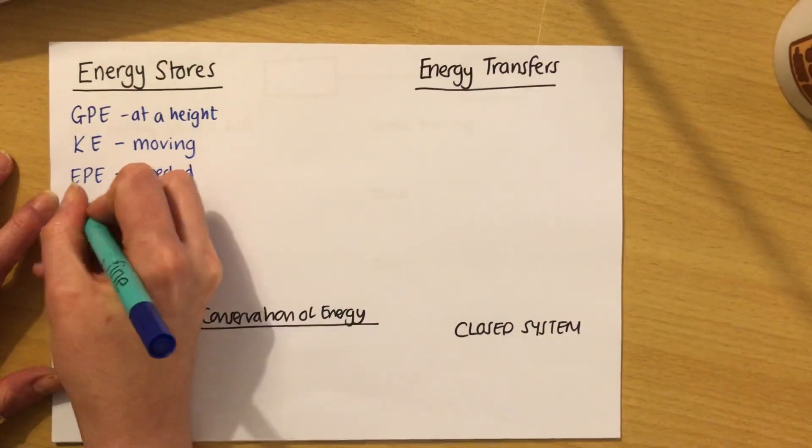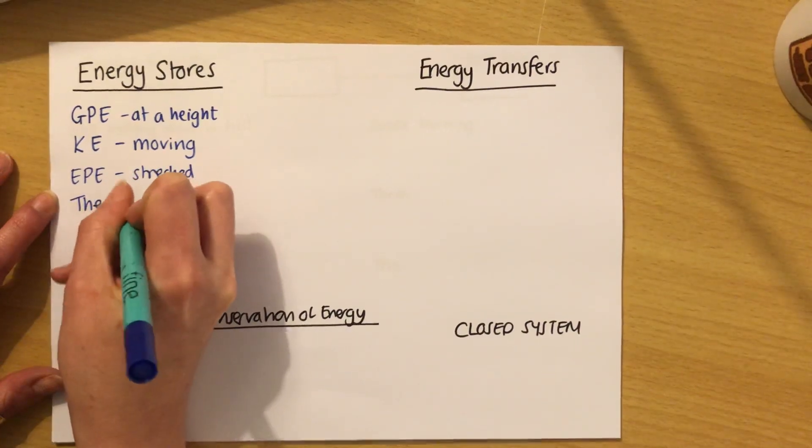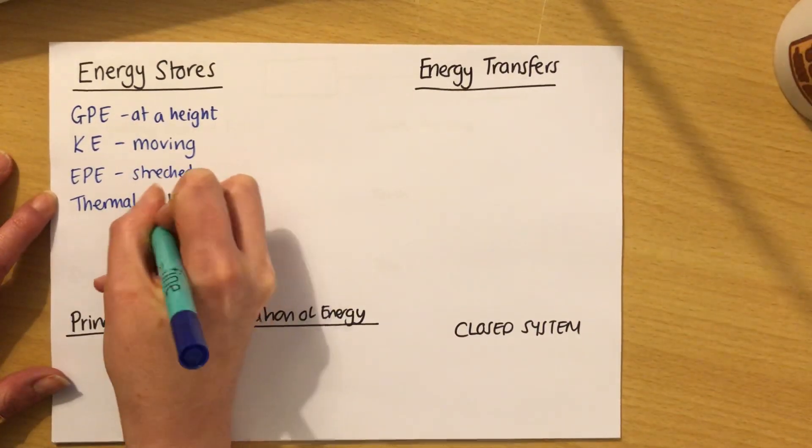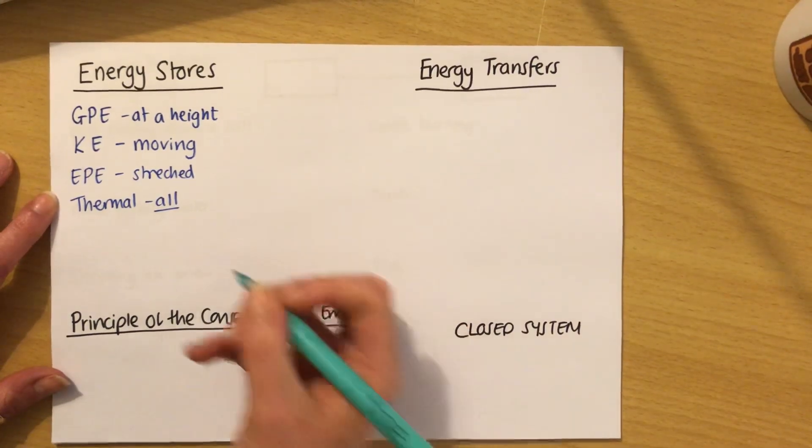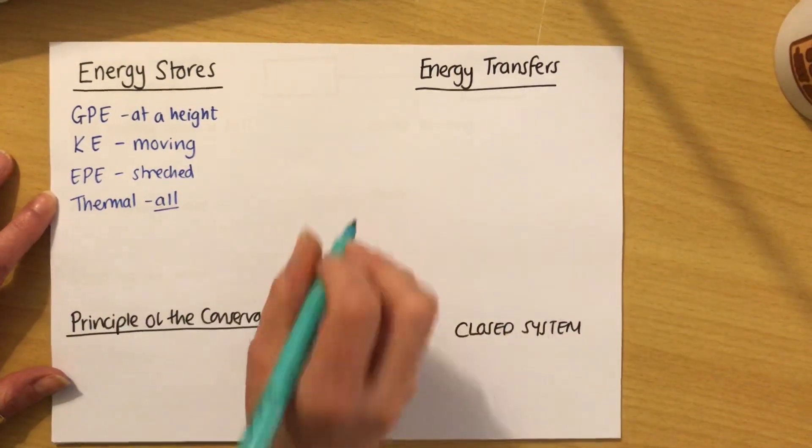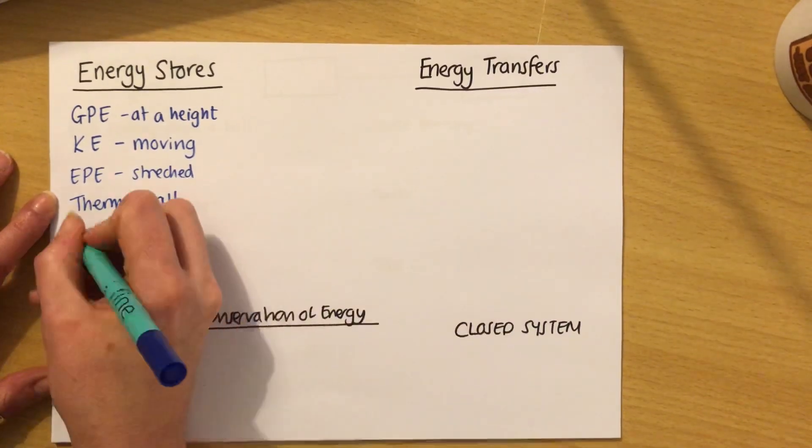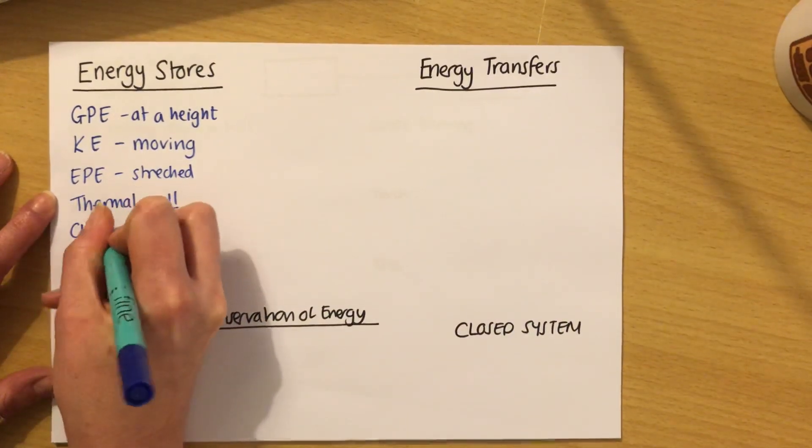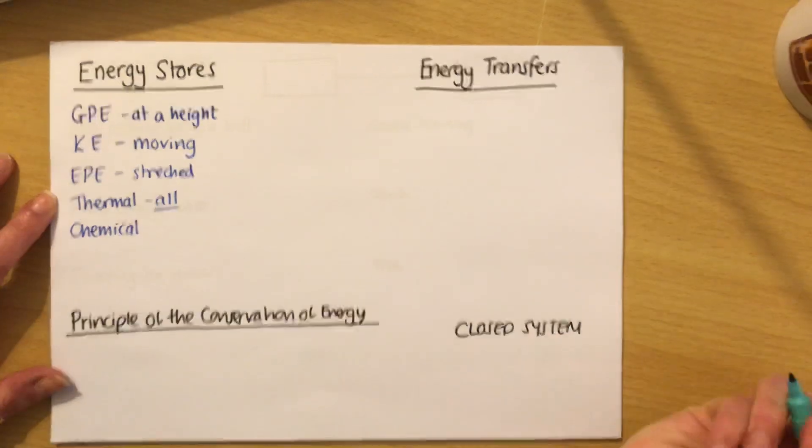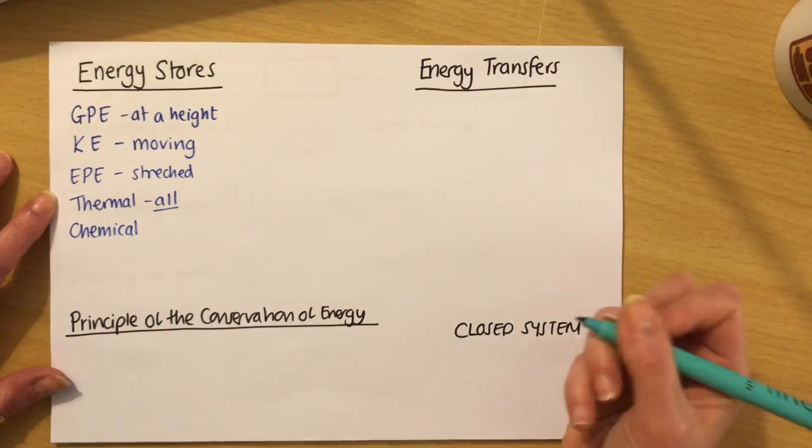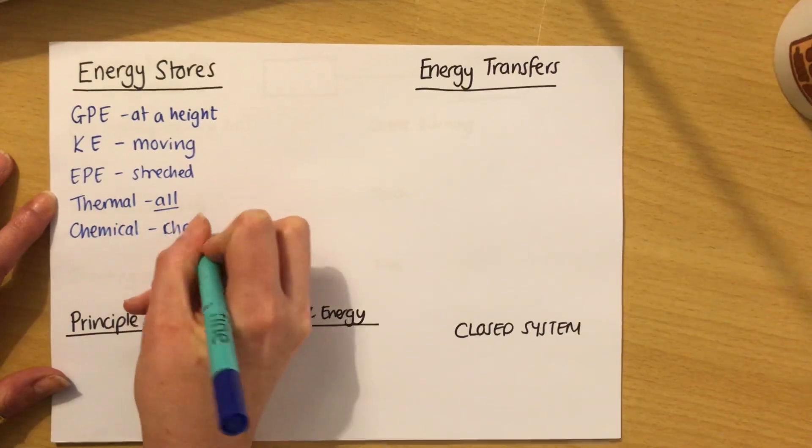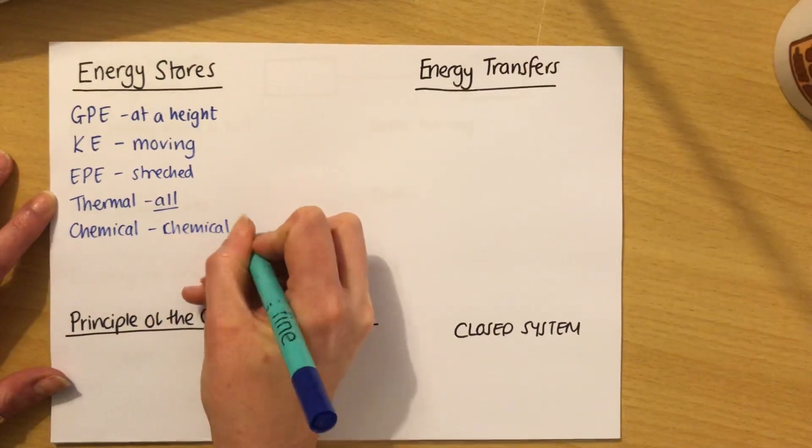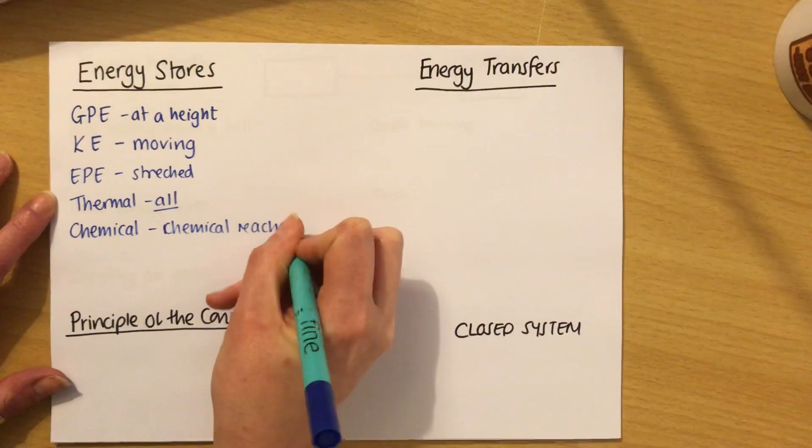Five more to go. The next is thermal energy. Now all things have thermal energy because all things have a temperature. They have some heat in them, but the hotter something is, the more thermal energy it has. Then we go on to chemical energy. Chemical energy is possessed by things that can perform chemical reactions. For example, if I have some fuel, I can burn it to release the energy.